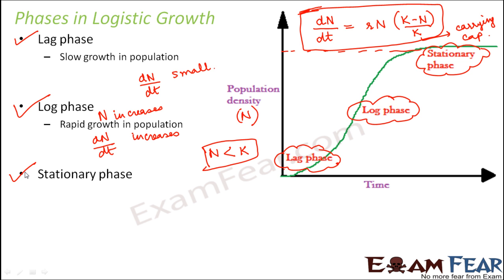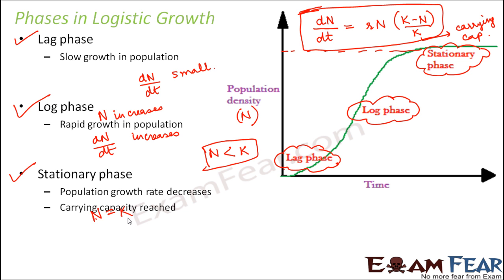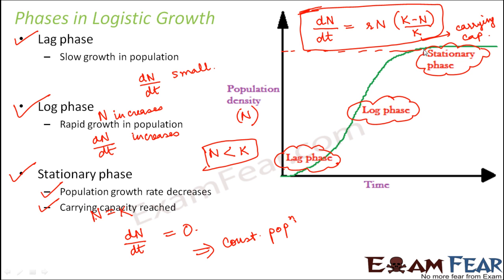When we reach the stationary phase, N becomes equal to K — that is, population density equals the carrying capacity. Since the carrying capacity is reached, population growth rate decreases to zero. If you substitute N = K into the equation, (K − N)/K becomes 0, making dN/dt equal to 0. This means a constant population, which you can also see in the graph as the curve becomes flat even as time continues to increase.